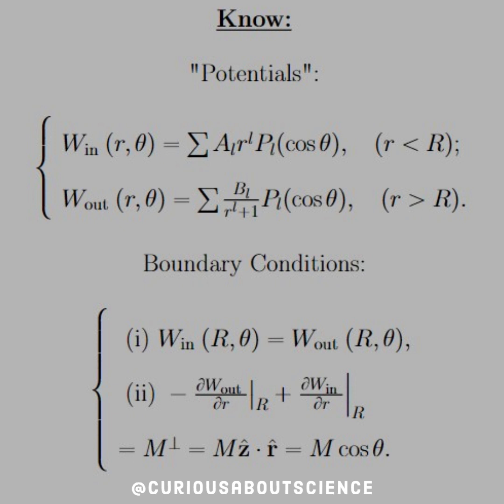So we see here that the boundary conditions work out to where, on the boundary, the potential inside has to equal the potential outside. And at the boundary, the normal derivatives have to be equal. And in this case, they're equal to the perpendicular component of the magnetization or M cosine theta.